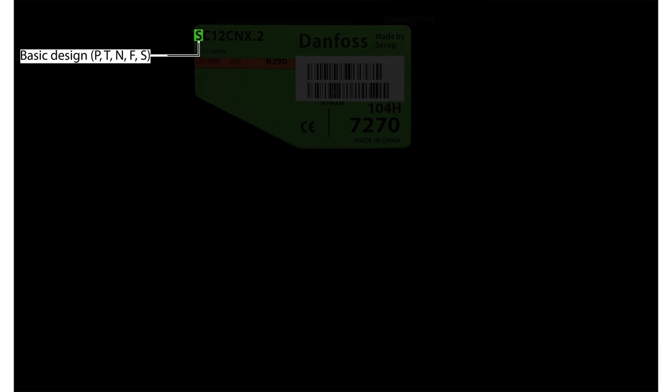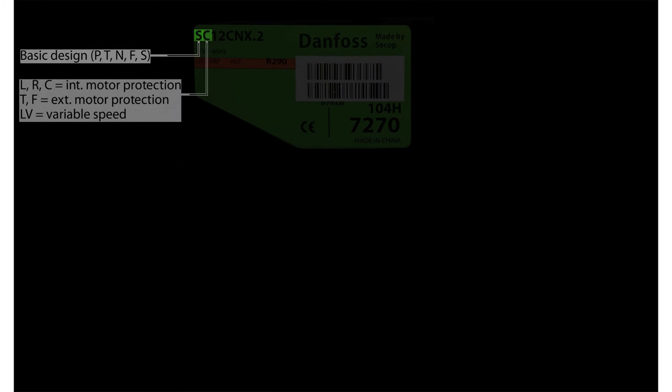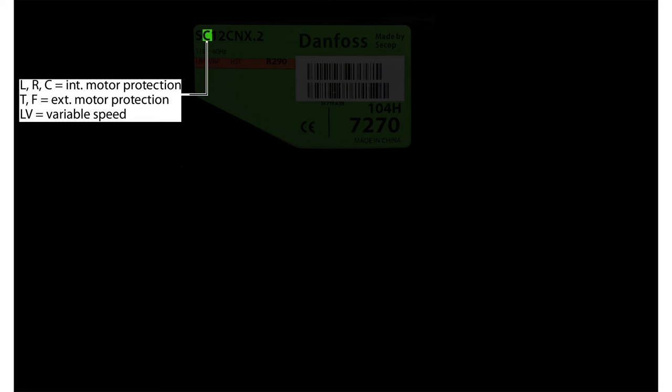The first digit, in this case S, signifies the product family. The second digit indicates the type and location of the compressor motor protector.